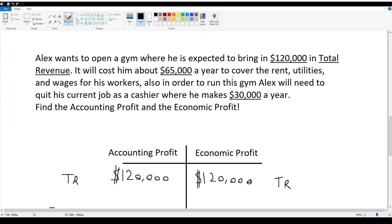It will cost him about $65,000 a year to cover rent, utilities, and wages for his workers. Also, in order to run this gym, Alex will need to quit his current job as a cashier where he makes $30,000 a year.